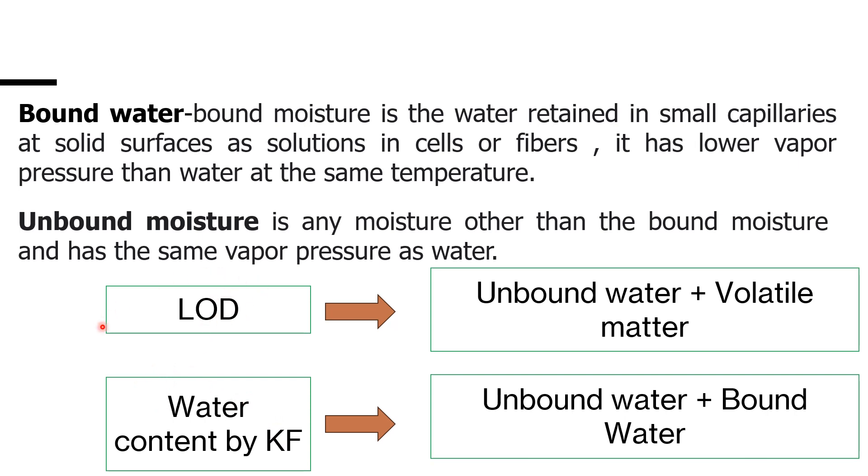By LOD, which we generally do on the moisture analyzer, we will get unbound water plus volatile matter. Volatile matter means like residual solvent or anything like that which is present. By testing LOD we will get unbound water and volatile matter.